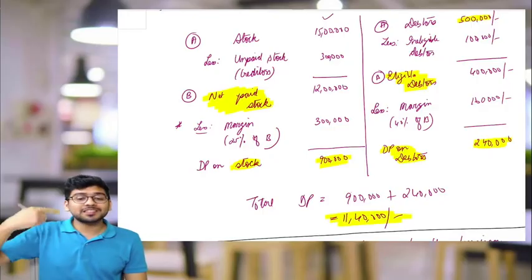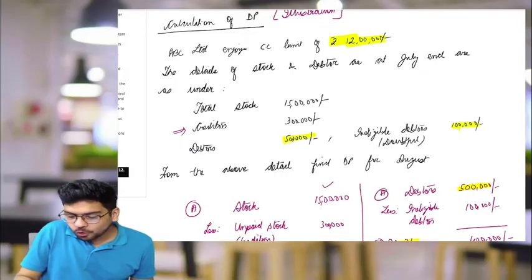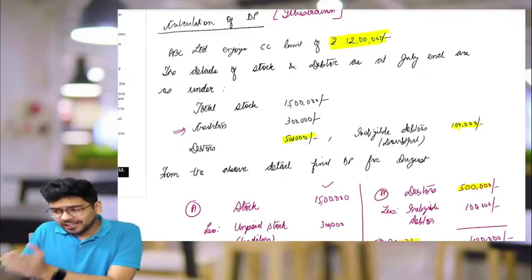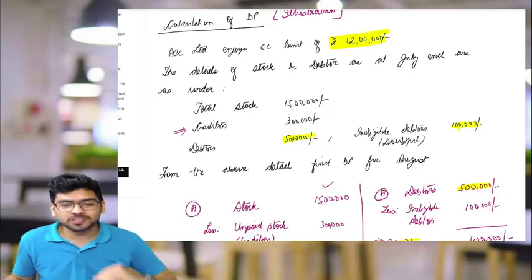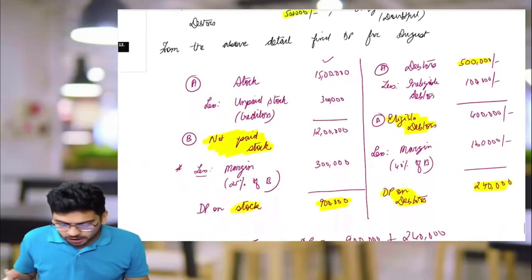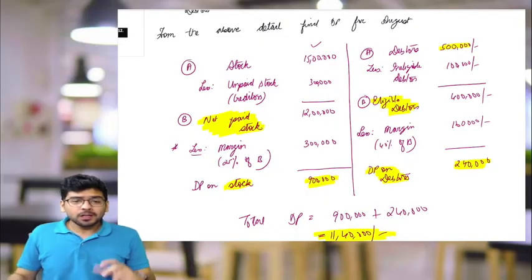Please understand the sanction limit was 12 lakhs, but I told you that drawing power will vary every month on the basis of the statements that ABC Limited is going to submit. This is how generally the bank will calculate the drawing power.